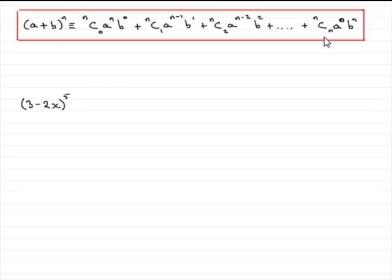Now, here's the binomial expansion formula that I would use in something like this. And we've got a as being the 3 and b as being the minus 2x. And n is the power 5.